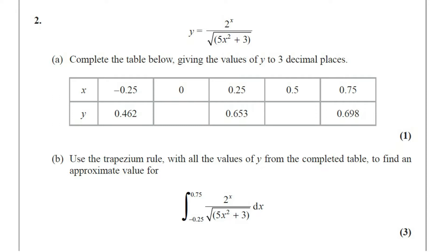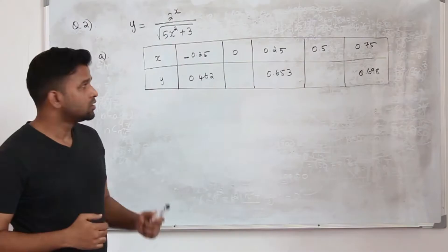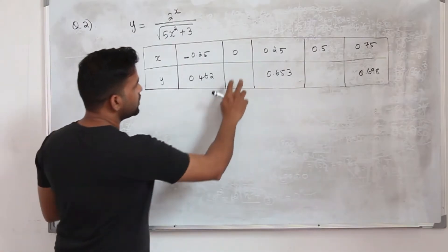Part A, complete the table below giving the values of y to 3 decimal places. The question carries one mark. So in part A, they want you to complete this table.